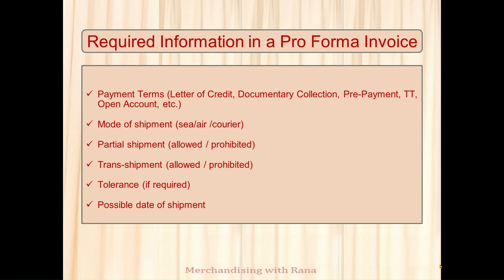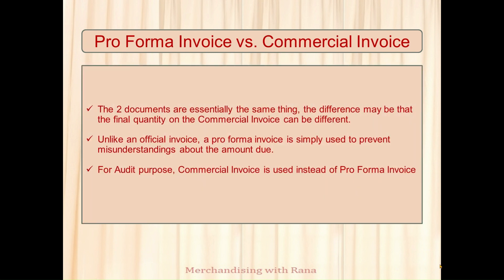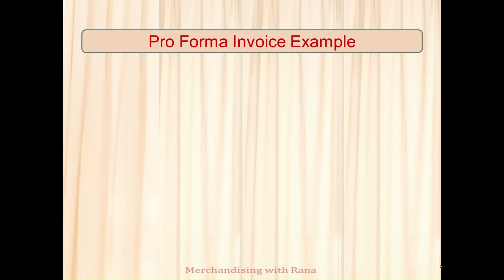Once the supplier sends the PI with the shipment date, if it is acceptable the buyer confirms; otherwise negotiation is needed. Regarding the difference between a pro forma invoice and a commercial invoice: these two documents are almost the same, but in a commercial invoice the quantity may vary slightly due to tolerance, as it is issued after goods are ready. The PI is mainly used to avoid conflict or misunderstanding before shipment, and for audit purposes a commercial invoice is used, not the pro forma invoice.